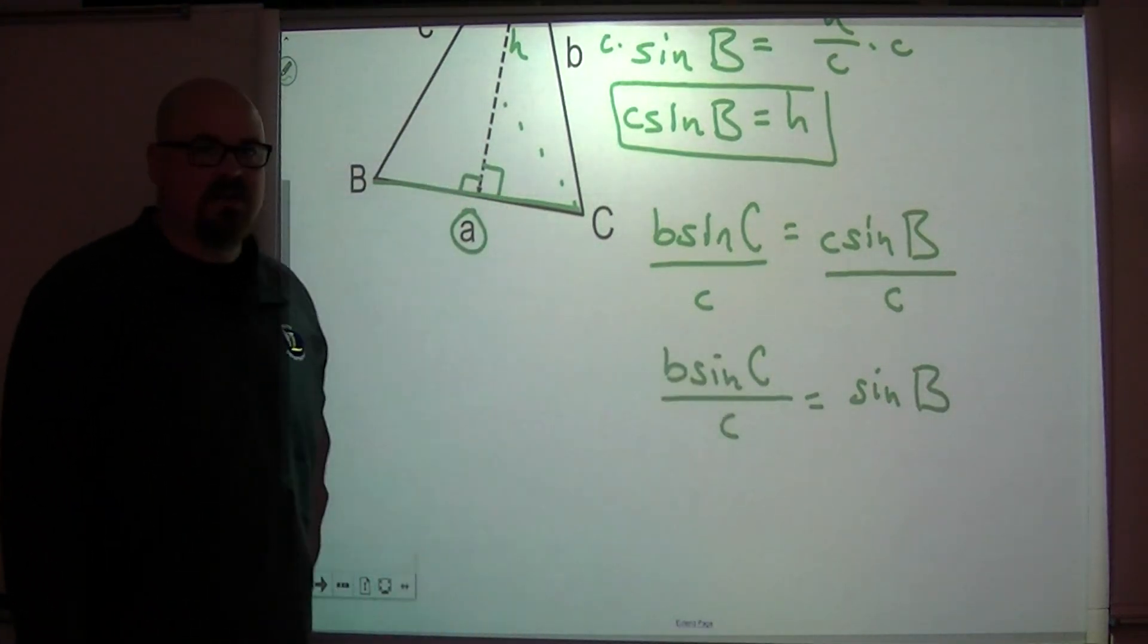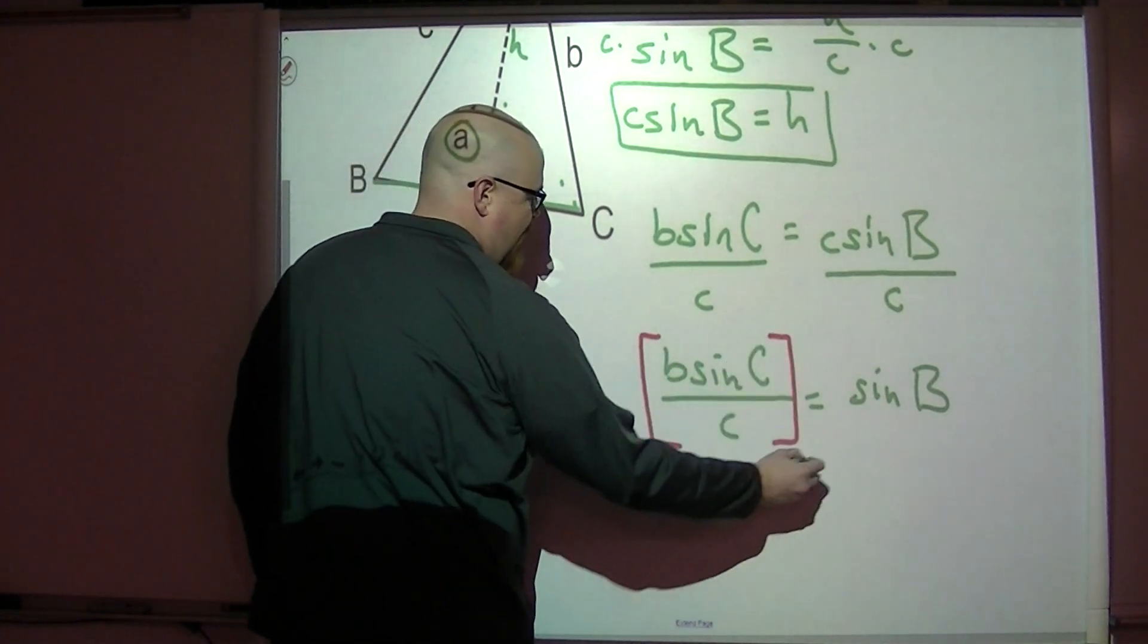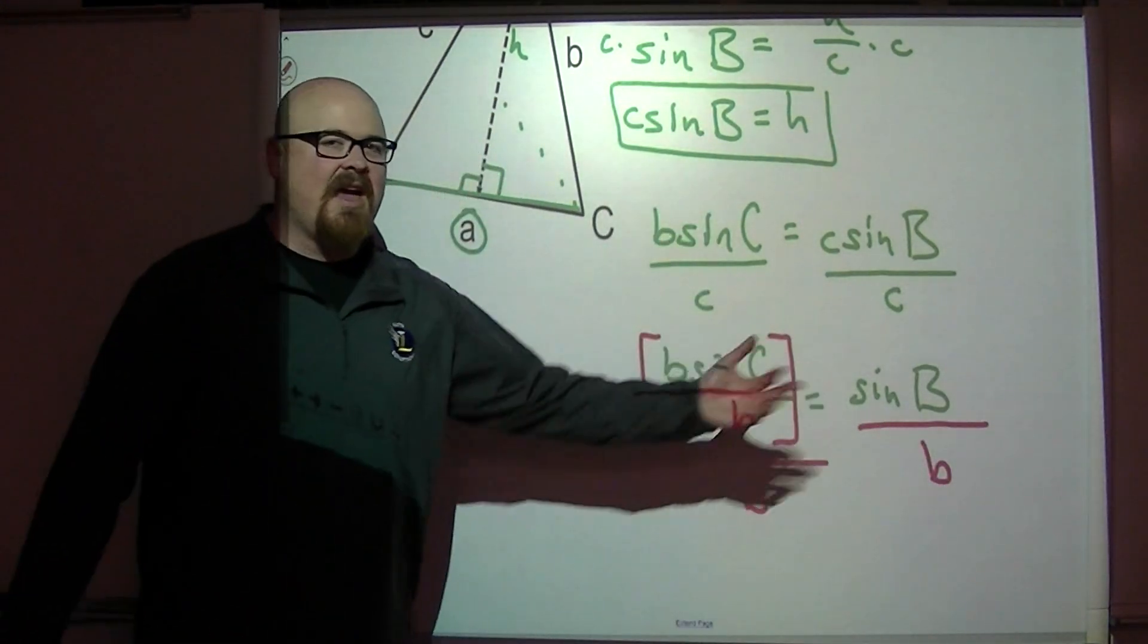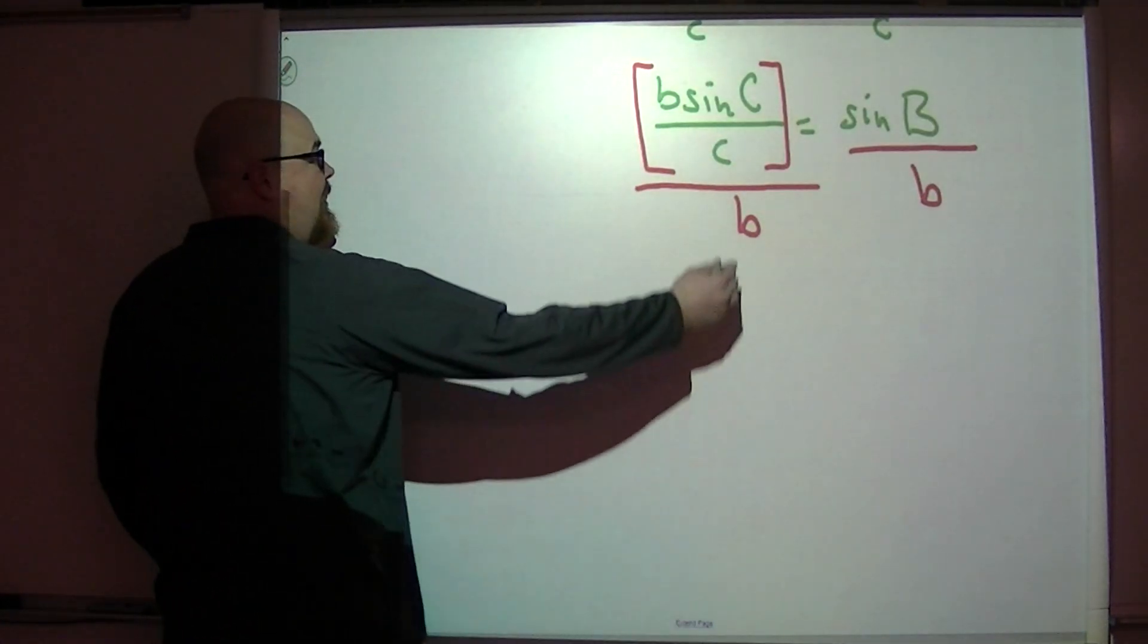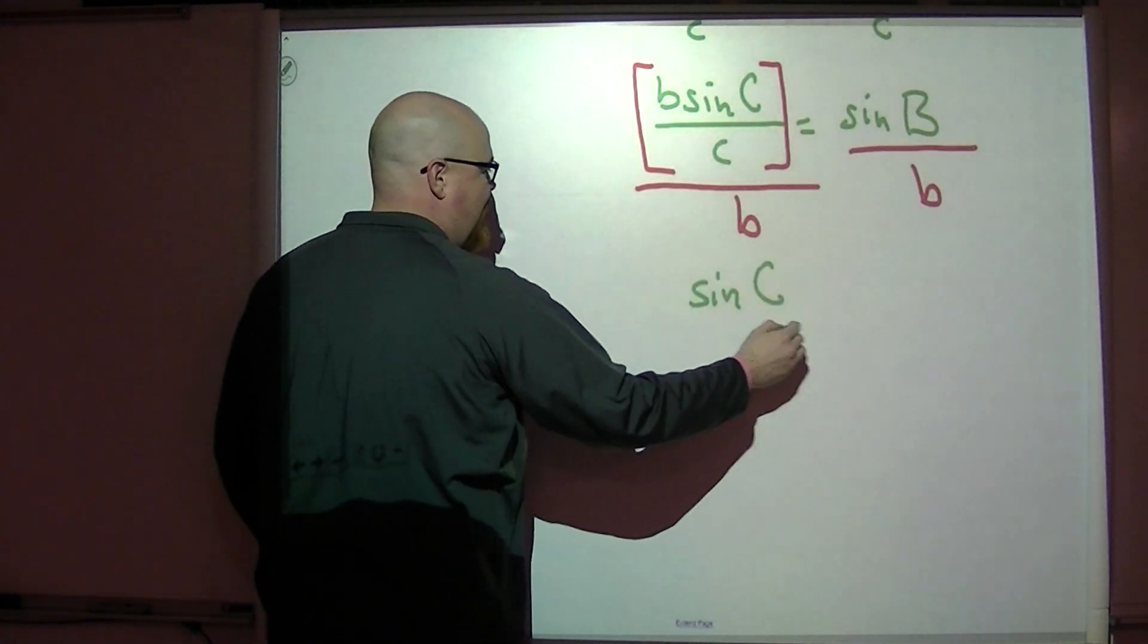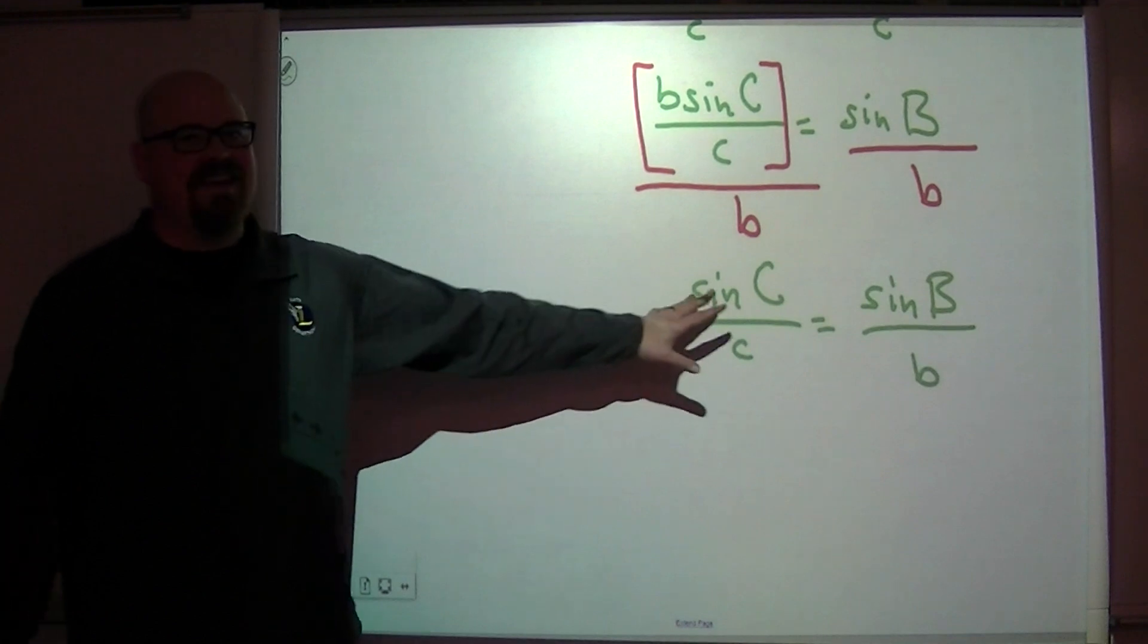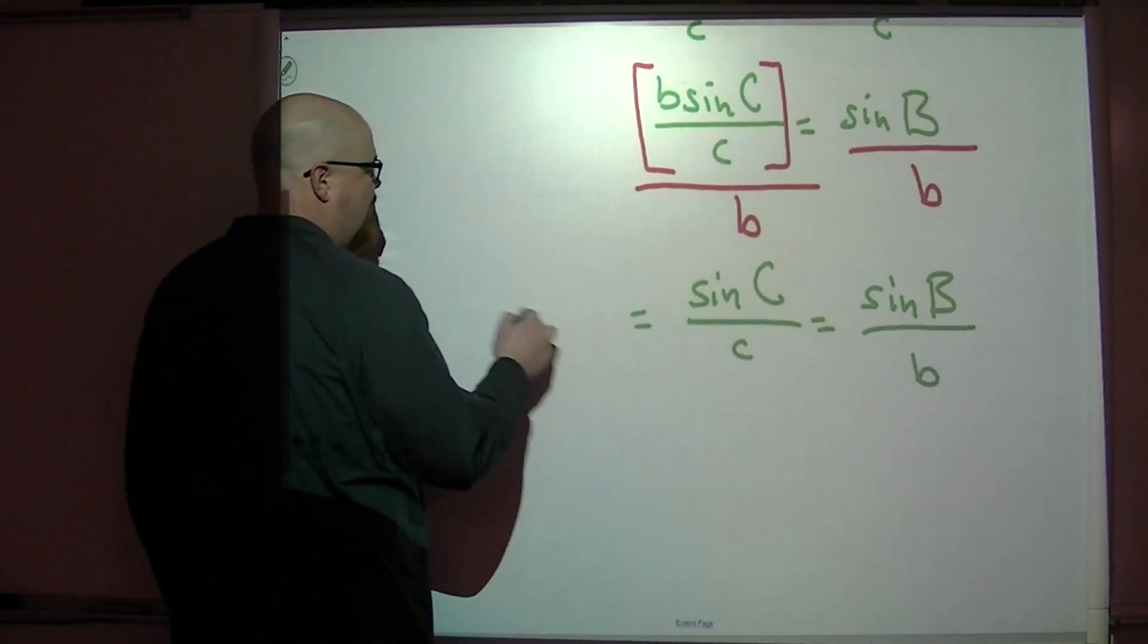Now I could take this expression and divide everything I see here by the side length B that's in the numerator right there, and then I would divide this, so now I'm just dividing both sides by B. If I do that, this B would slide up into this denominator and cancel with that B, so I'd end up with the sine of C over C equals the sine of B over B. And this is two-thirds of the extended proportion of the law of sines.